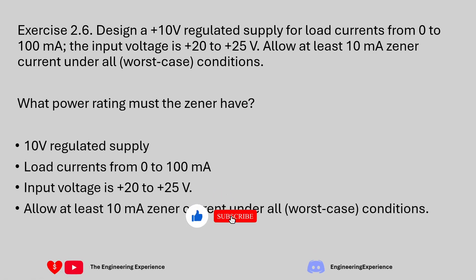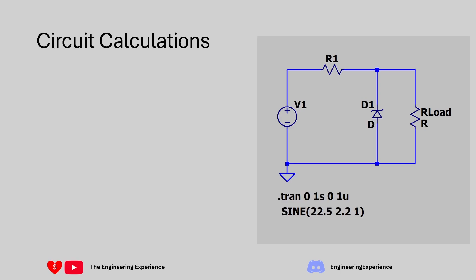Let's first summarize the main points. We need to design a 10 volt regulator power supply. The load currents are from 0 to 100 milliamps, the input voltage is from 20 volts to 25 volts, and we need to make sure we don't have less than 10 milliamps of current going through the Zener diode at all times. This is the circuit given to us in the question - we have the load resistor representing our load and the output voltage. The Zener diode will need to be a 10 volt Zener diode.